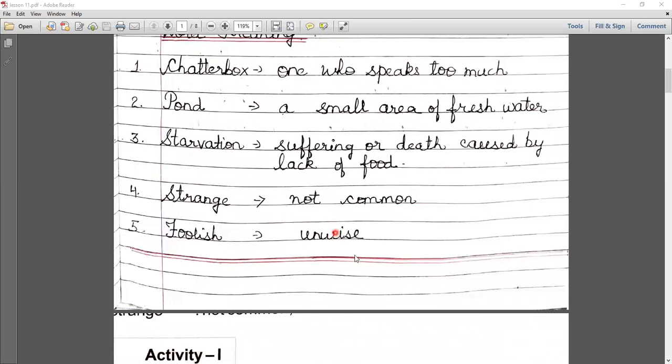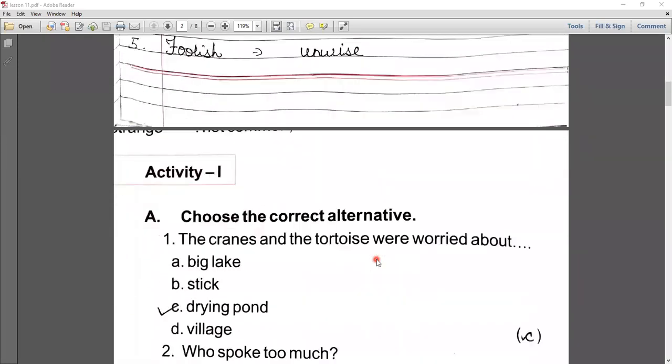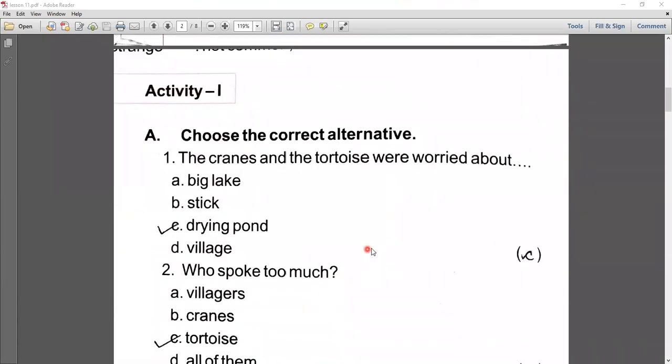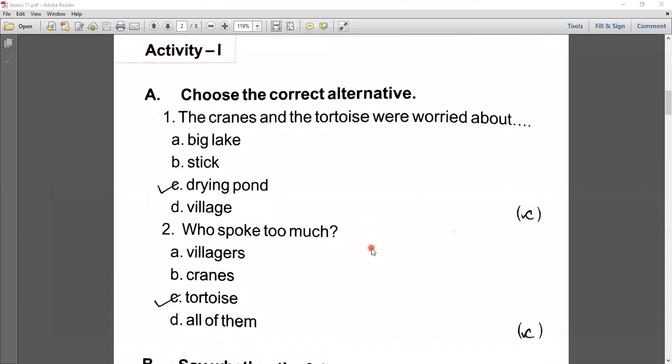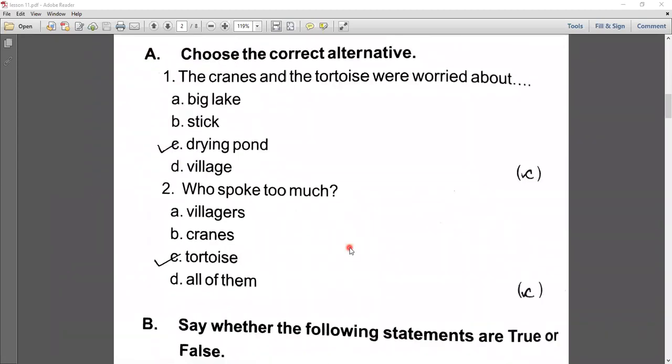Number fourth, strange, which means not common. Number fifth, foolish, which means unwise. Now let's start the activity of this chapter. Choose the correct alternative. The cranes and the tortoise were worried about the drying pond.